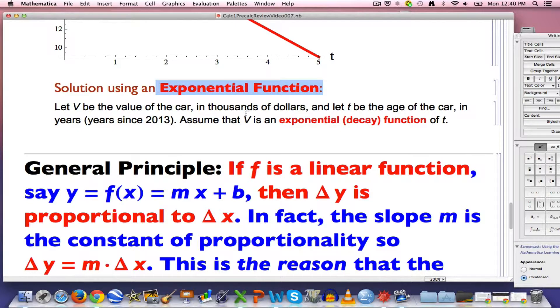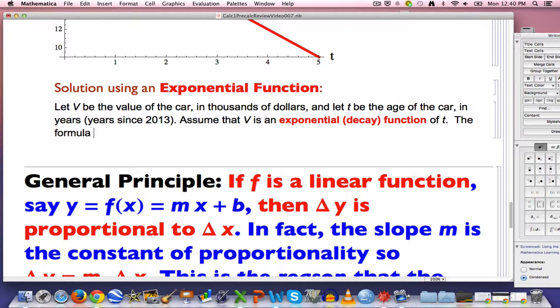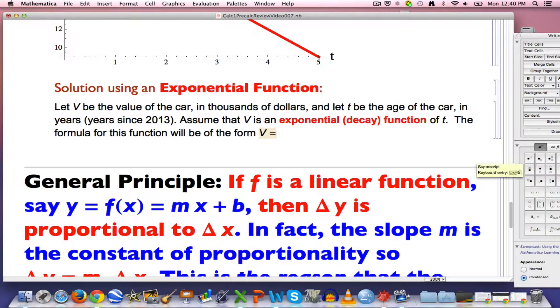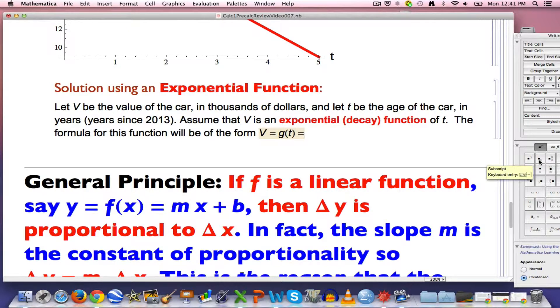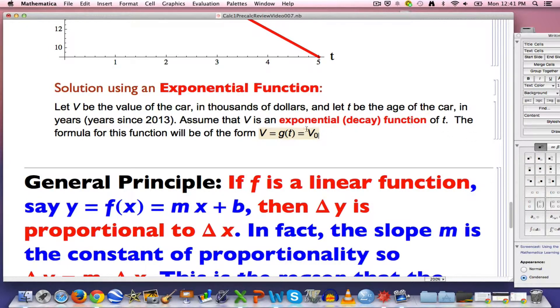We're going to assume v is the value of the car in thousands of dollars, t is the age of the car in years since 2013. Now we're going to assume v is an exponential decay function of t. The formula for this function will be v equals g of t. Here's an important point: the initial value, if you know the initial value, you can put it here first. I'm going to label it with a v sub 0. v naught is the initial value, which was $24,000. Instead of adding the slope times t, like we do with a linear function, we're going to multiply the initial value times some number to the t power.